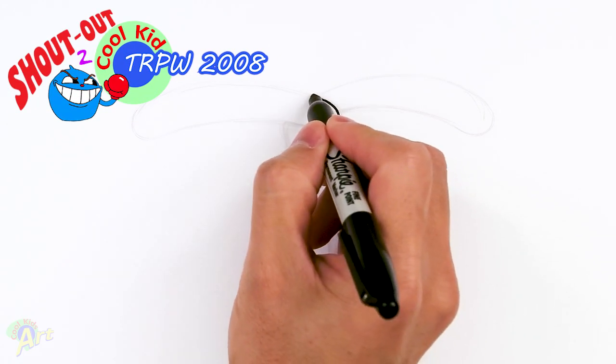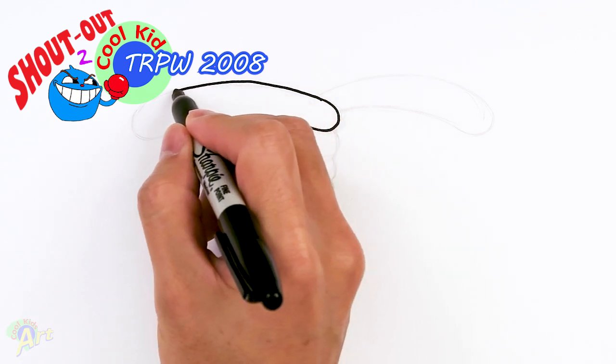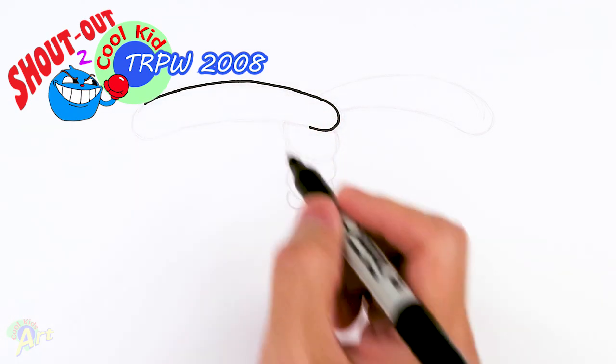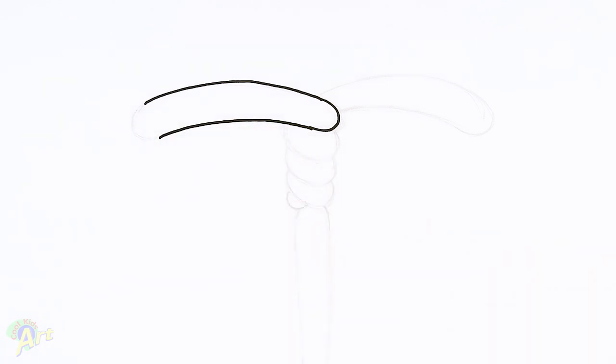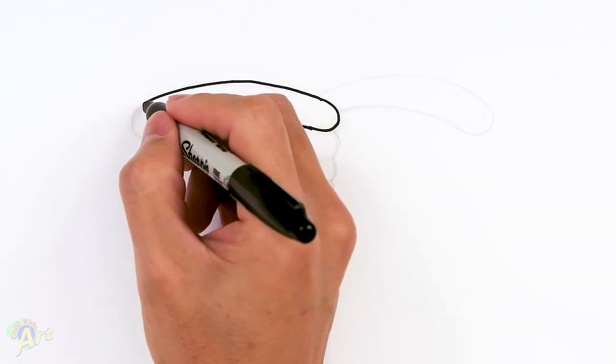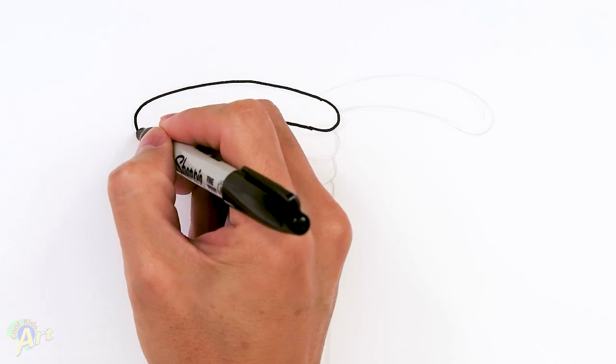And then once you have that, we're just going to curve this one out. Okay, so we're just going to continue the curve and we're going to make it a little bit wider on this side. And we'll just close that off.